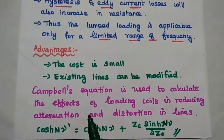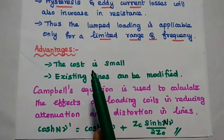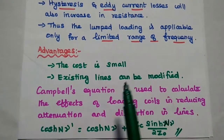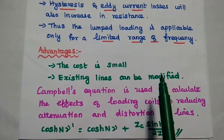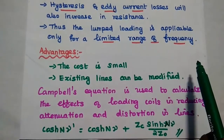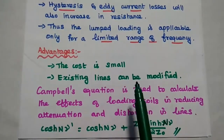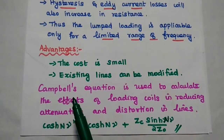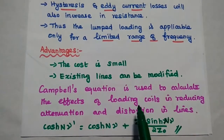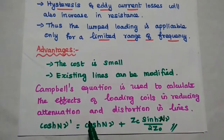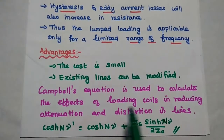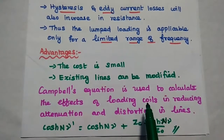The major advantages of the lumped loading method are: the cost is small, and existing lines can be modified. We are not replacing the existing line; we are simply placing lumped inductors at uniform intervals. Loading coils — that is, lumped inductors — are used, and their effect in reducing attenuation and distortion can be calculated using Campbell's equation.